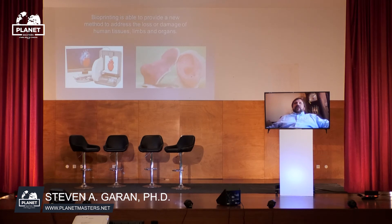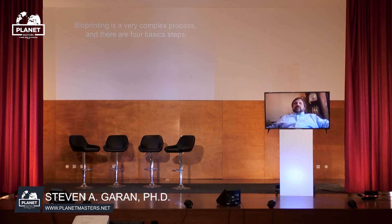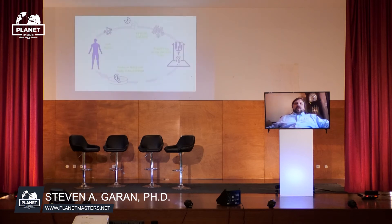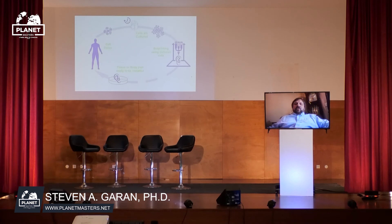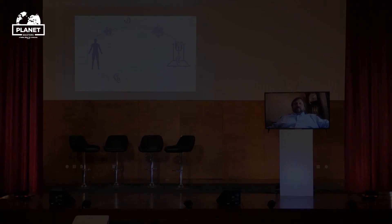Bioprinting is a very complex process, but it can be broken down into four components. It starts with the donor of the cell — the person who will receive the tissue, organ, or limb will donate their own cells, which will be grown in culture. It's important to understand that our limbs, organs, and tissues are made of more than one cell type. In fact, there are over 200 distinct cell types in our bodies.